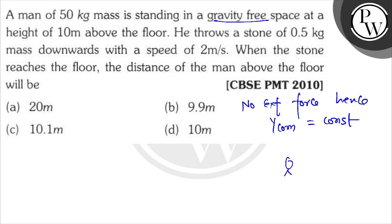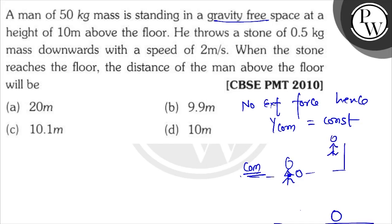So, let's say the person has a ball, and both have their center of mass at this point. This is the center of mass line. After some time, the ball comes to the floor. And how much height will the man reach? Let's say this is the height he will reach from the center of mass location.